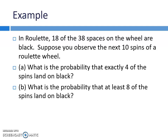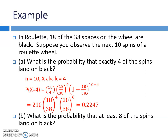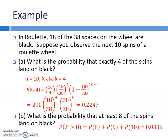In roulette, 18 of the 38 spaces on the wheel are black. Suppose you observe the next 10 spins. We want to know: what is the probability that exactly four of the spins land on black, and what is the probability that at least eight of the spins land on black? This is binomial. Out of 10 trials, we want exactly four, so x = 4. Substituting into the formula, we get 10 choose 4 times (18/38)⁴ times (20/38)⁶, which equals 0.2247. For the probability of at least eight, that means eight or more out of ten, so you need to apply the formula for eight, nine, and ten separately, then add them together.